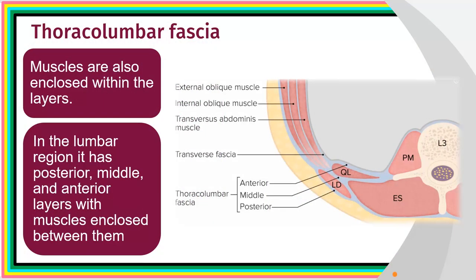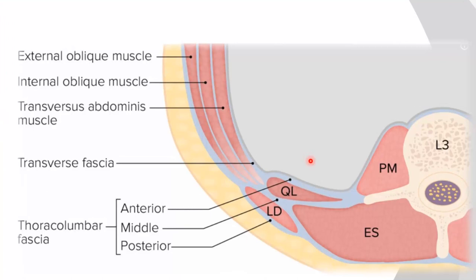This diagram shows us the different layers of the thoracolumbar fascia. Here is the thoracolumbar fascia including a number of muscles within its layers. In the lumbar region we see its three layers: the anterior layer here, the middle layer here, and the posterior layer here, with the muscles found between them.